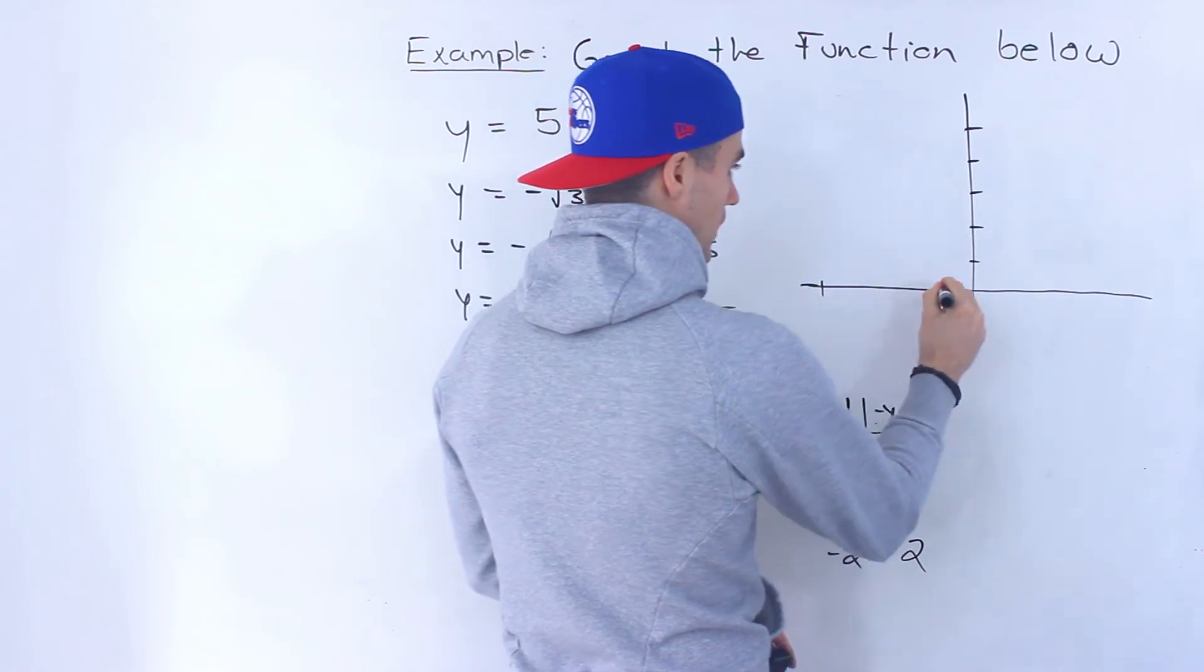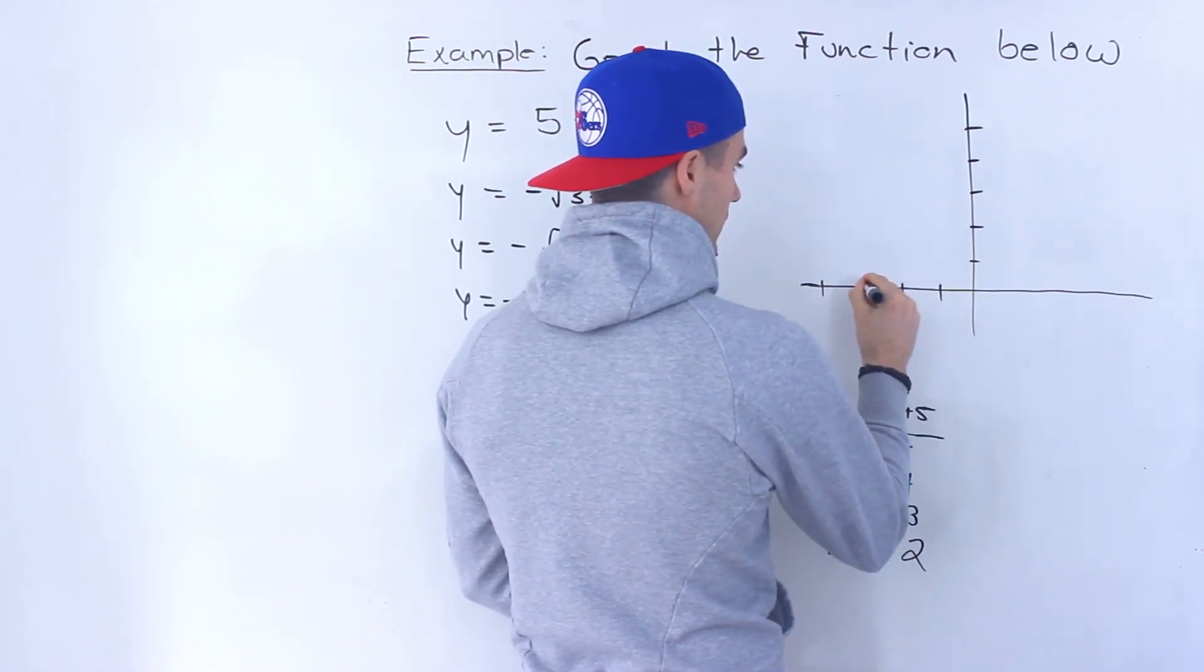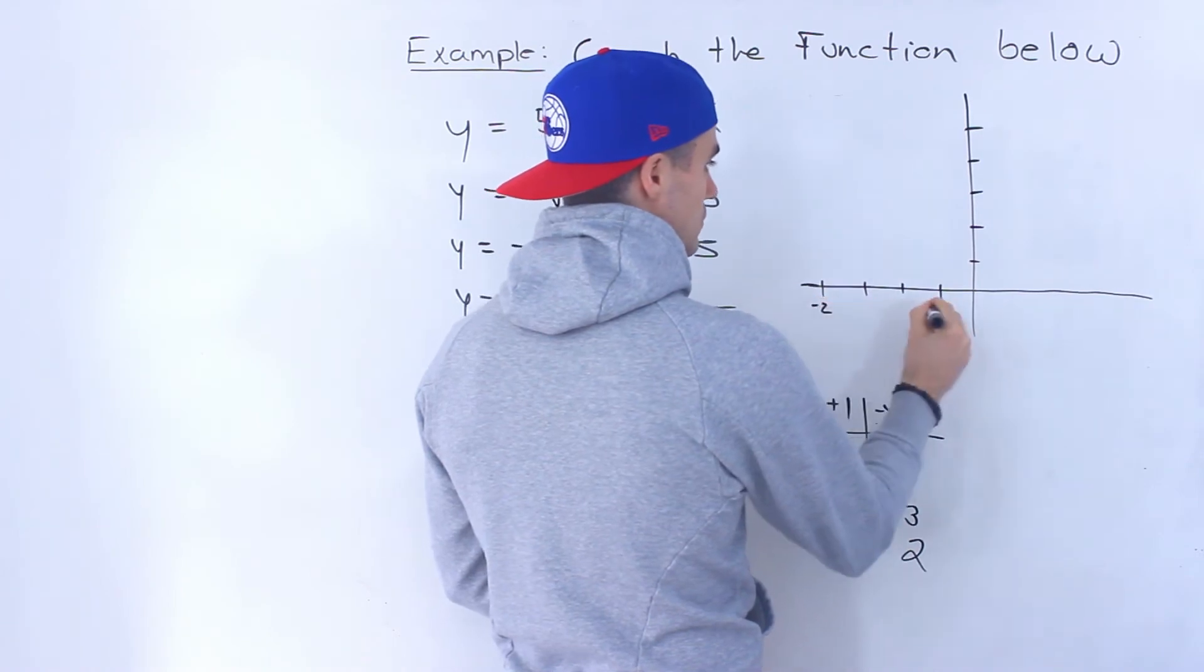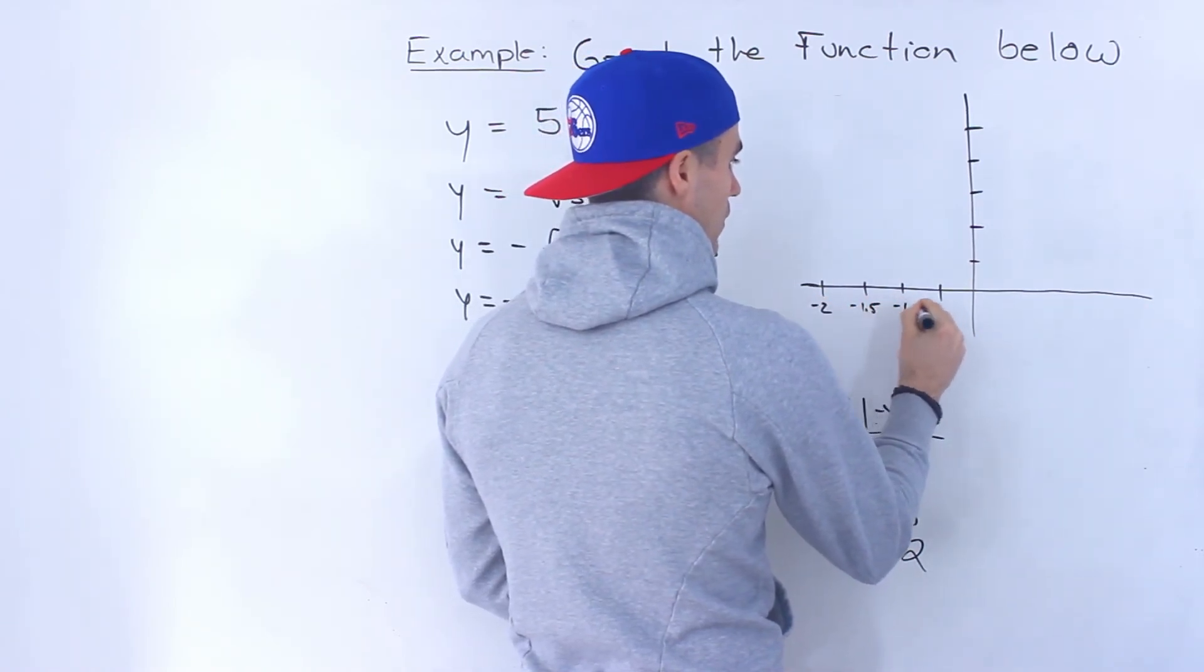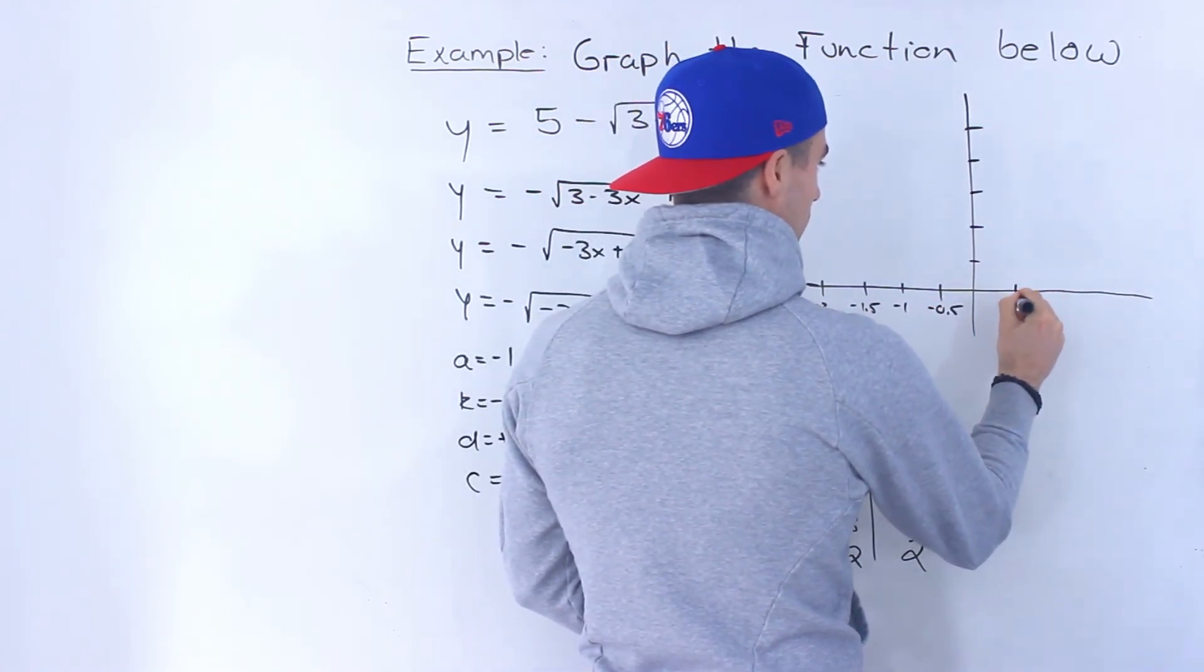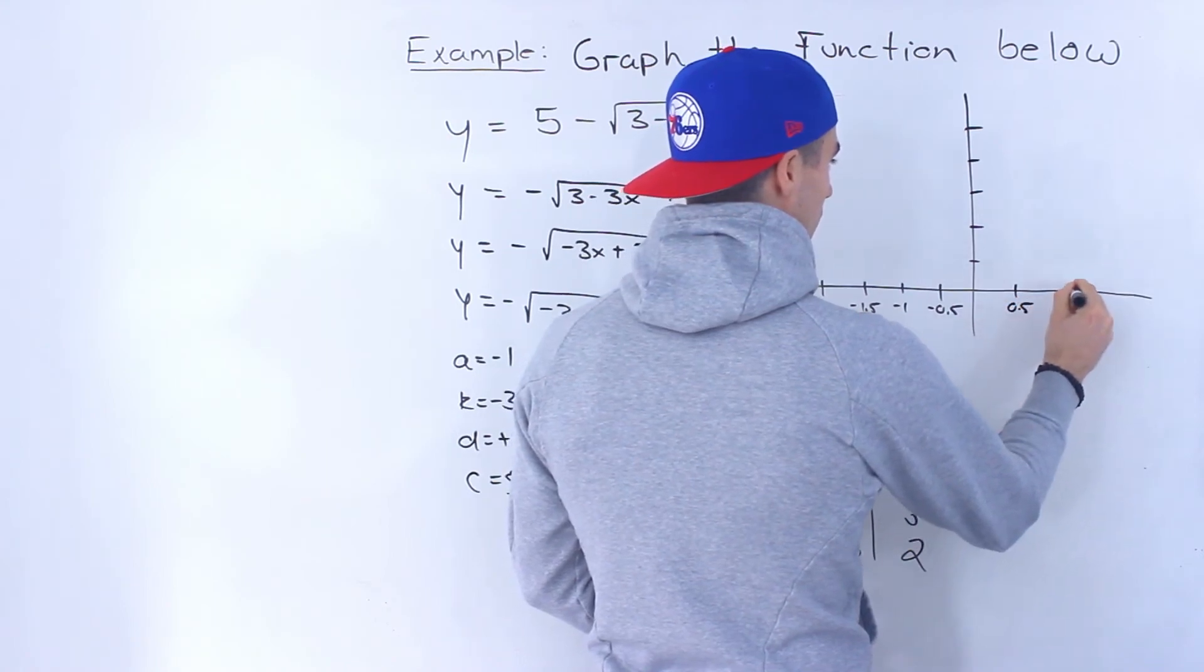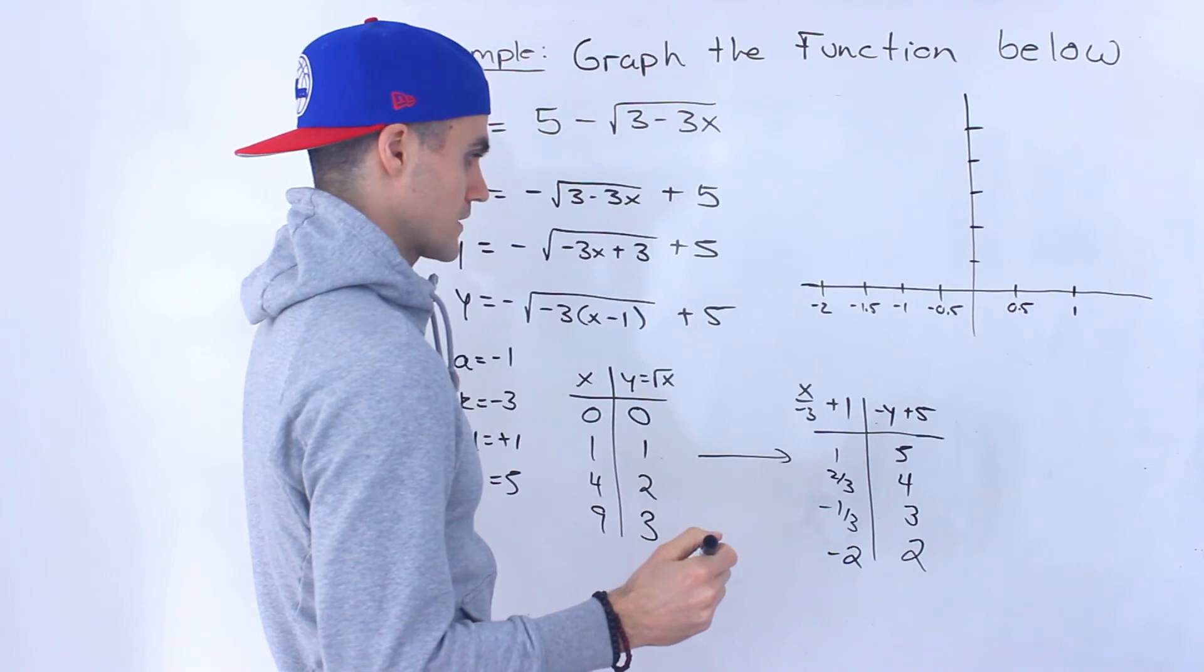So we'll do 0.5, negative 0.5, 1, negative 1.5, negative 2. Then we'll have 0.5, and then 1. I think that's all we need.